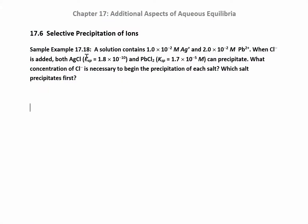Our last section looks at the selective precipitation of ions, which has everything to do with the KSP. In this problem, they give you two sets of conditions: you have lead chloride and silver chloride. So you have a mixture of ions — silver ions and lead ions — and you're going to add some chloride to figure out which salt precipitates out first. It depends on which one needs the smaller concentration of chloride ions to reach equilibrium.